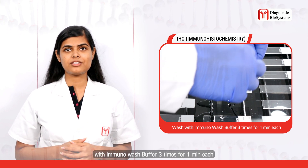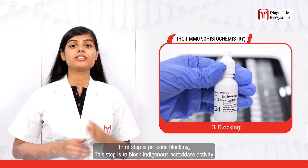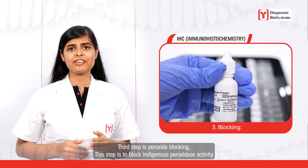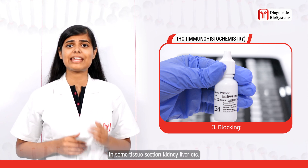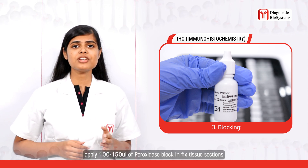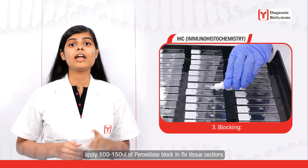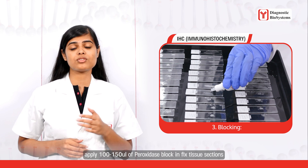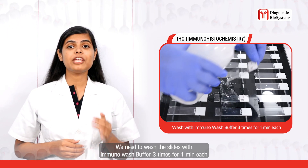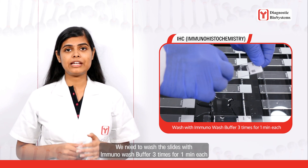The third step is peroxidase block. This step blocks endogenous peroxidase activity in some tissue sections like kidney and liver. Apply 100 to 150 microliters of peroxidase block to the fixed tissue sections, then wash the slides with immunowash buffer three times, one minute each.